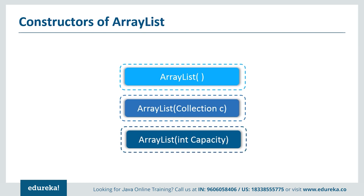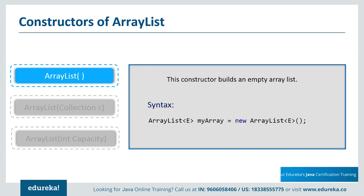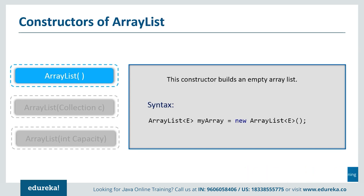Now let's see the various constructors supported by Java ArrayList. The first is ArrayList() — this constructor builds an empty ArrayList. In the syntax, the reference 'myArray' holds references to objects of type E. The array has an initial capacity of 10 cells, though the capacity will be increased as needed as references are added to the list.